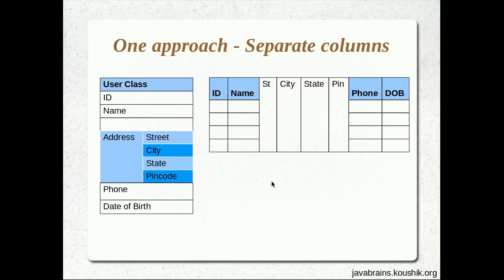That is what differentiates an entity from a value object. An entity has meaning on its own, but a value object does not. So it's not just this Address object — even the name is a string, so it's a value object. It has a value for an entity and does not have meaning on its own. So the Address object here is a value object.